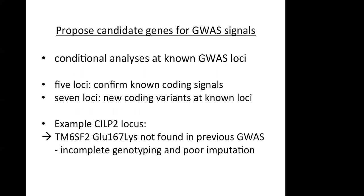Something useful that could be done with this dataset was to propose candidate genes for GWAS signals. Using conditional analyses at known GWAS loci, they could confirm coding signals for five loci and find new coding variants at seven loci where previously a non-coding signal was thought to play the causal role. As an example, they point out the SLC2 locus, where the variant they found had simply been missed in previous GWAS analyses due to incomplete genotyping and poor imputation.